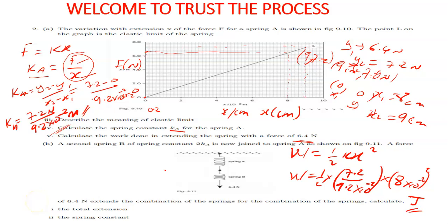Welcome to Trust Process. This is the continuation of part B in question 2. The question says a second spring B with spring constant 2kA — meaning twice that of spring A — is joined to spring A as shown in figure 9.11. A force of 6.4 newtons extends the combination of the springs. Calculate the total extension as well as the spring constant. To answer this, you need the concepts of spring arrangement.